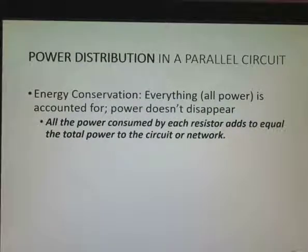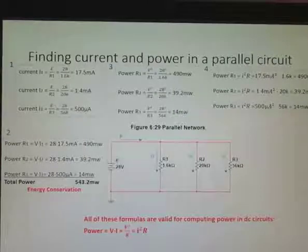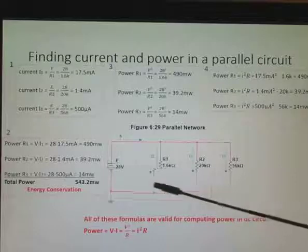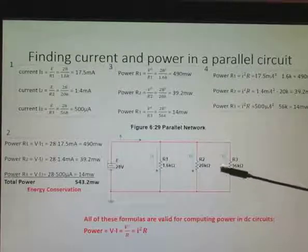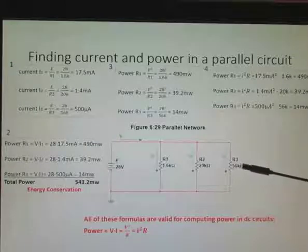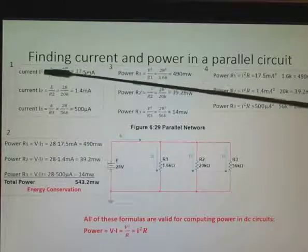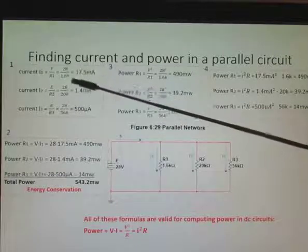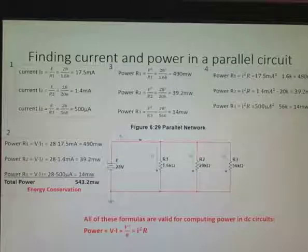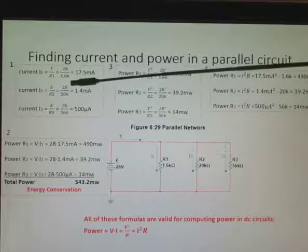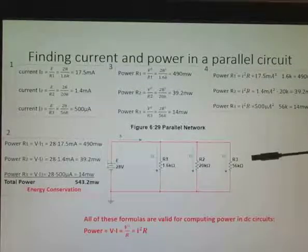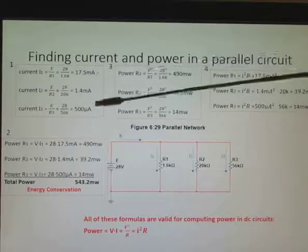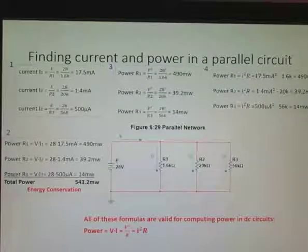Power distribution in a parallel circuit. All power is accounted for. Power just doesn't disappear. So all the power consumed by each component will be added up to equal the total power. So this looks very busy, but let's concentrate here on our circuit. We have 28 volts across three resistors, so they each have the same voltage across them. And I'm going to use that to my advantage. Find I1, which is the source voltage divided by R1: 28 divided by 1.6k equals 17.5 milliamps. And I did that for each one: 28 volts divided by 2k and then 28 volts divided by 56k. And I get all these values. And I can add them up to get the total current of the source current if I wanted to at this point.